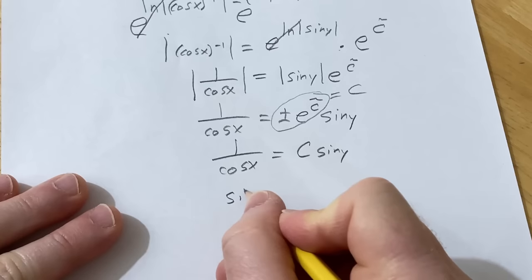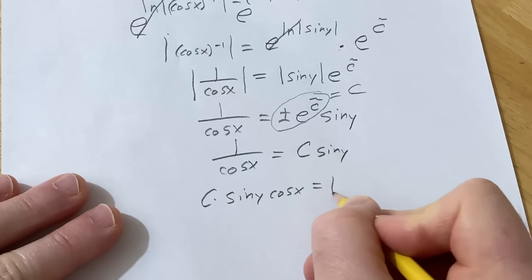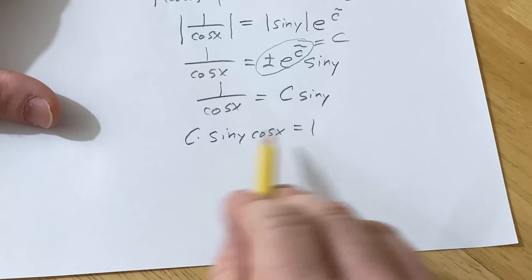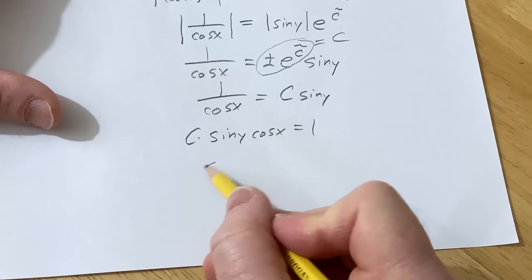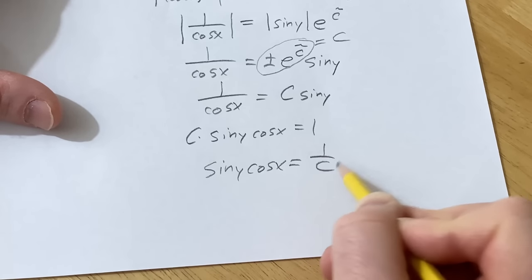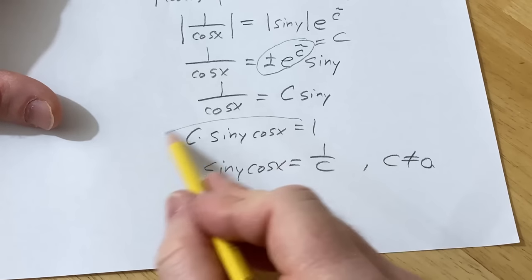So this would be sin(y)cos(x) times c equals 1. And as long as c is not 0, you could divide by c. So you could write this as sin(y)cos(x) equals 1 over c, you know, if c is not 0. Or you can just leave it like this. That works, too.